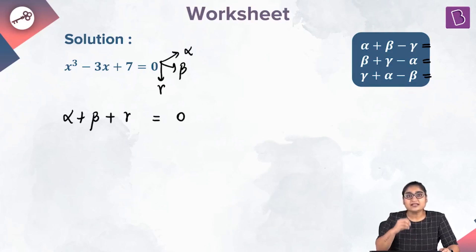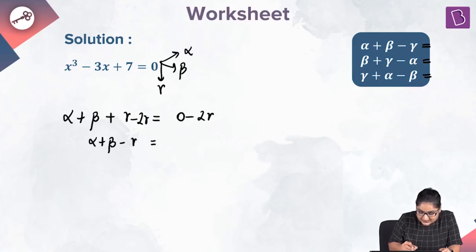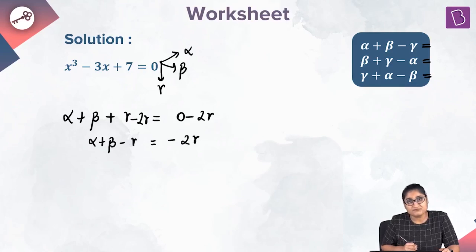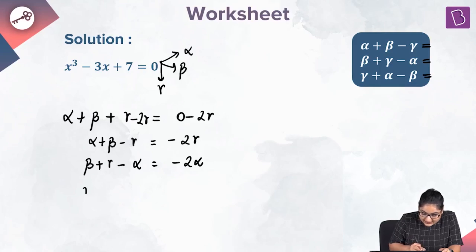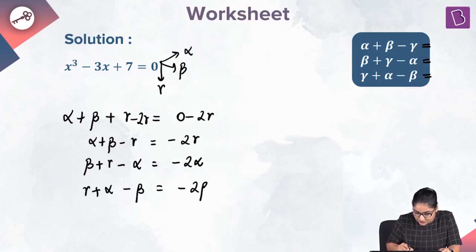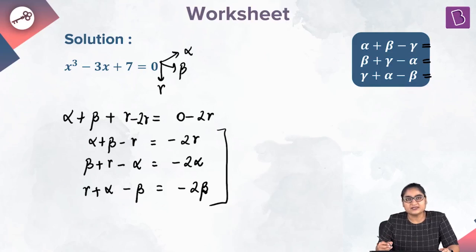Now if I subtract 2 gamma from both sides of the equation, what I'll get is alpha plus beta minus gamma is equal to minus 2 gamma. Similarly, beta plus gamma minus alpha is equal to minus 2 alpha and gamma plus alpha minus beta is equal to minus 2 beta.